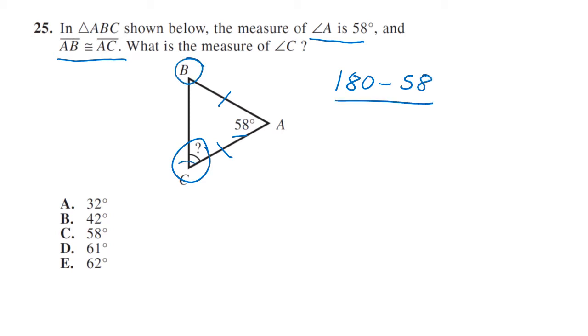We divide that by 2 because they're equal. Because the sides are equal, the angles are equal. It's an isosceles triangle. So divide that and we have 61. So your answer is D. Angle C is 61 and angle B is 61.